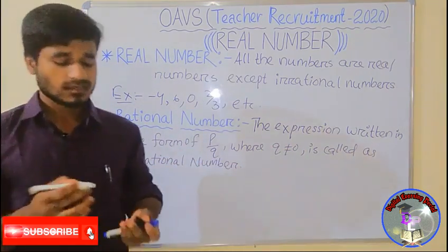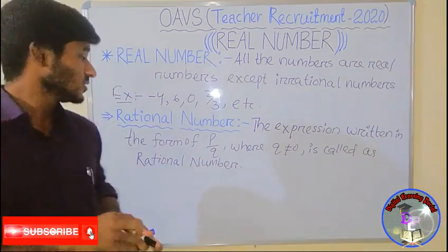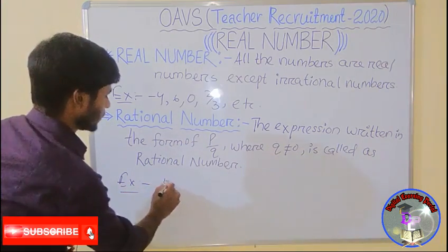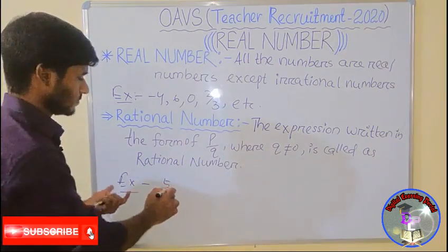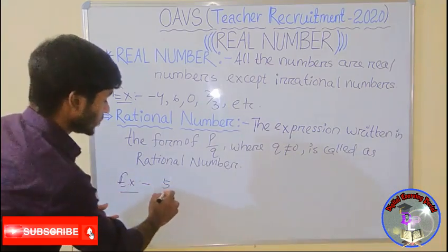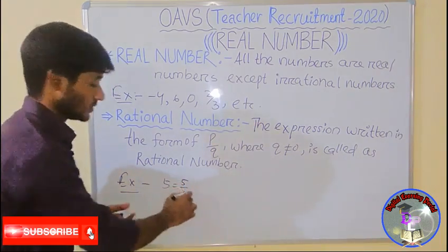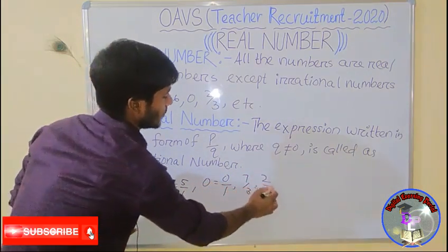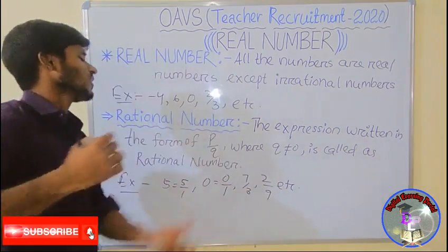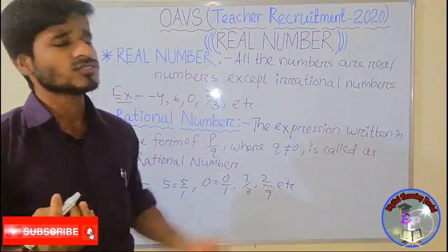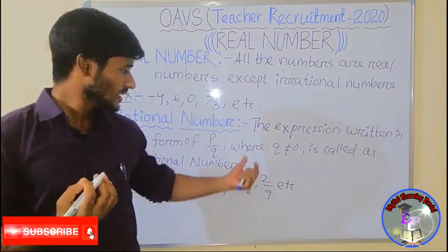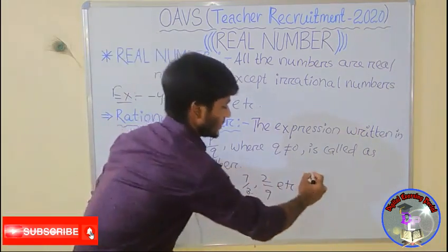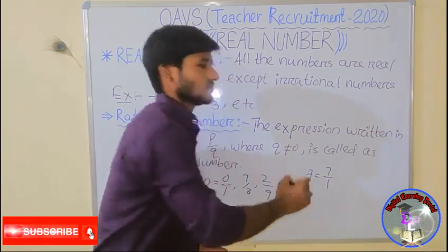P by q means it is a fraction form where q is not equal to 0. Its examples will be: 5, because 5 can be written as 5 by 1; 0, because 0 can be written as 0 by 1; 7 by 3; 2 by 9; etc. All belong to rational numbers because we can write them in the form of p by q. For example, 7 is also a rational number because 7 can be written as 7 by 1.